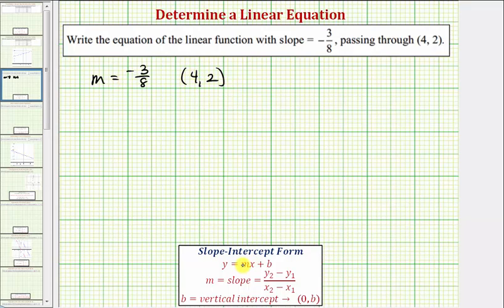But because we know the slope is equal to negative three-eighths, we know our equation will be in the form y equals negative three-eighths x plus b.